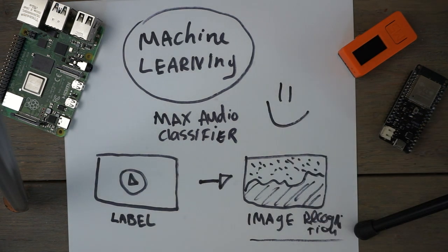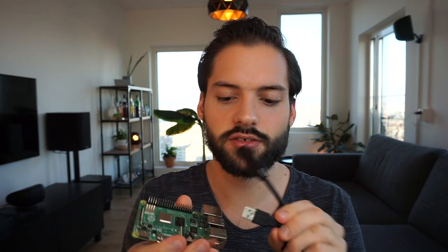Unfortunately, the M5 stick is not powerful enough for this machine learning model, so we need something else. The hardware for this is pretty simple: just a Raspberry Pi and a USB microphone. You plug in the microphone and it should work.